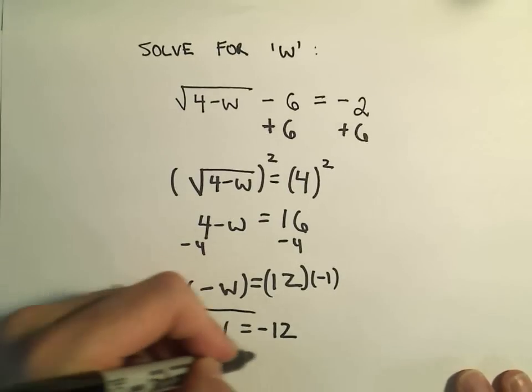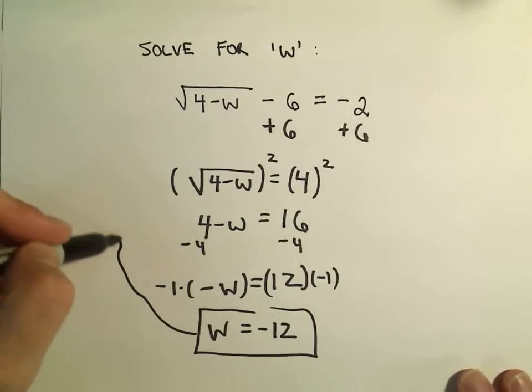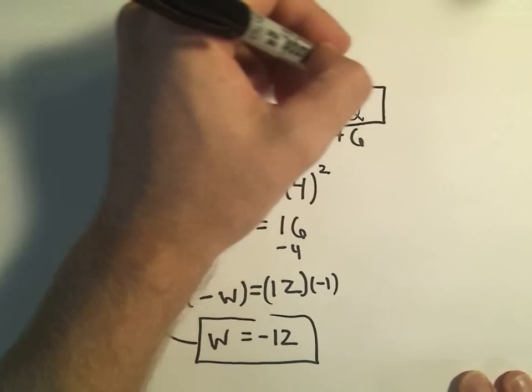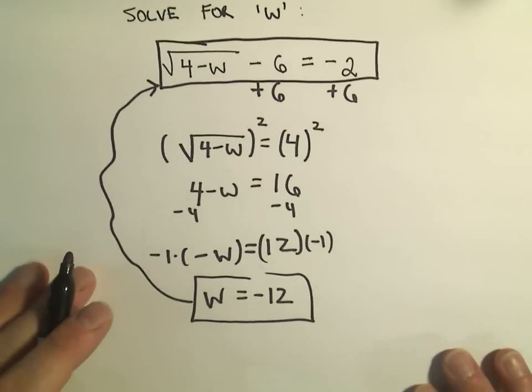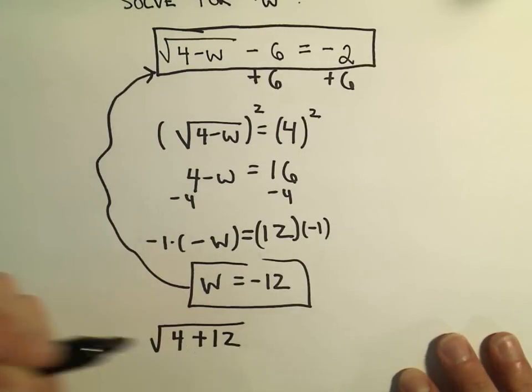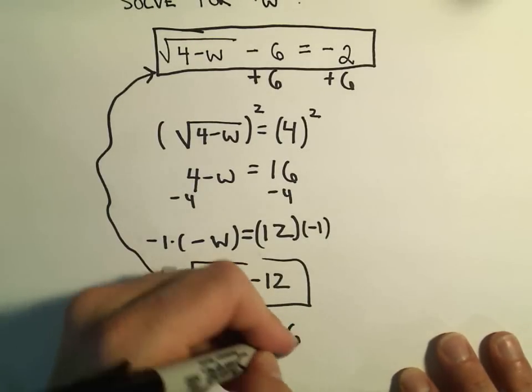And you should always go back and check your answers to see if they work. So notice if we plug it into the original problem, we would have the square root of 4 minus negative 12, which would make 4 plus 12, minus 6.